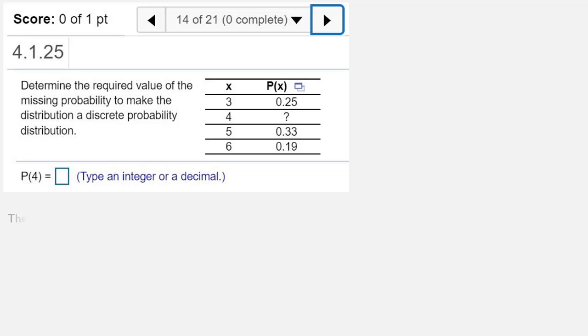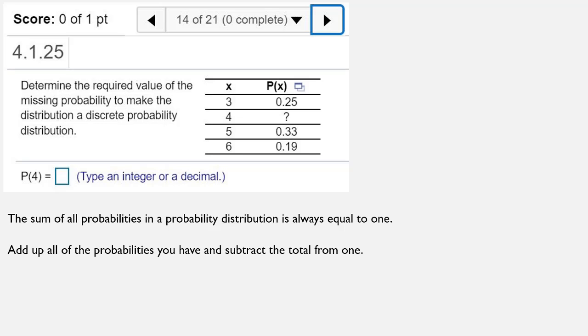So how do we do this? Well, the sum of all the probabilities in a probability distribution always equals 1. We have 3 out of the 4 values in this probability distribution. So let's add up the values we do have and then subtract from 1. And that should give us the value we don't have.